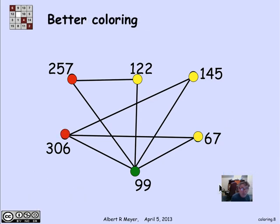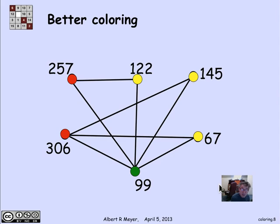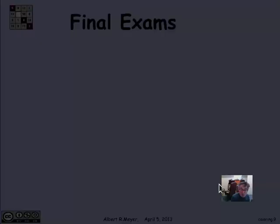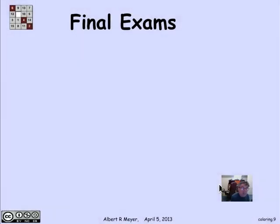That was not the smartest way to color. A better coloring is shown here — you can check that every two adjacent vertices have different colors, and it's done with only three colors: red, yellow, and green. So three gates suffice, giving a better schedule.